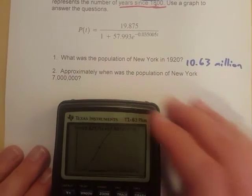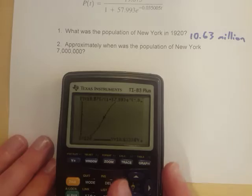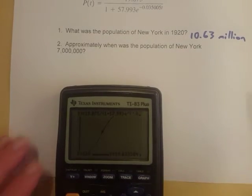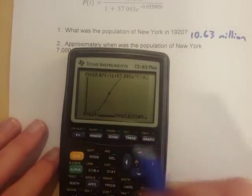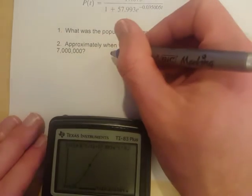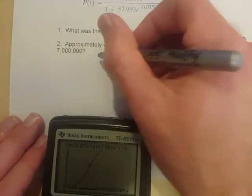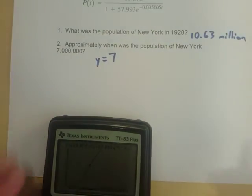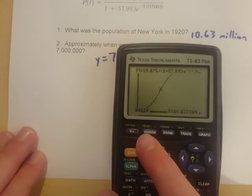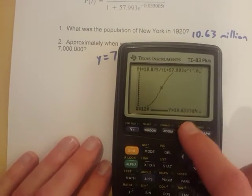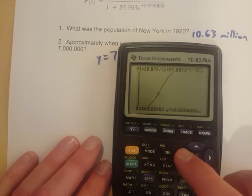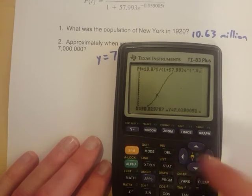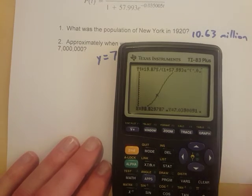The next one is a little tricky. It asks: when approximately was the population of New York 7 million? Keep in mind the numbers on the graph are already in millions, so we need a y value of seven. We want to know when y equals seven. We could get an approximate value by tracing, and looking for when y is about seven — somewhere in there it's pretty close. But I want to get it more exact.